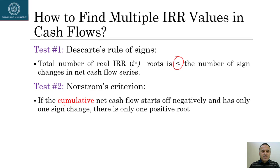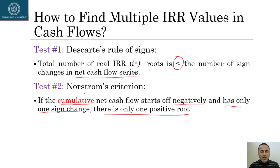Norstrom's criteria, on the other hand, is applicable based on cumulative cash flows. It says that if the cumulative net cash flows start off negatively and have only one sign change, there is only one positive root. The book says that Norstrom's criteria is more of a discriminating test — if you have a situation of multiple IRRs, it discriminates one IRR from another. I'll show you through an example that it is not that difficult.